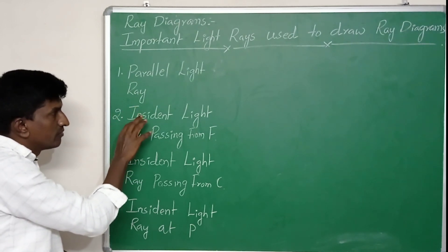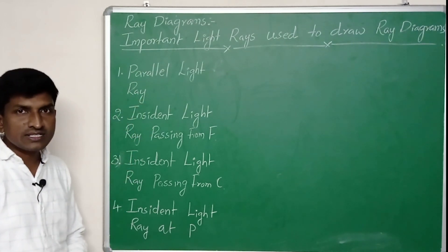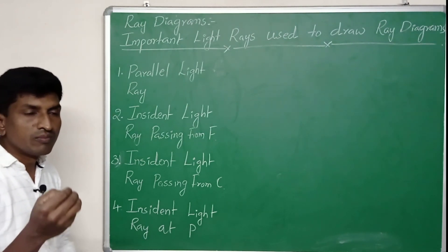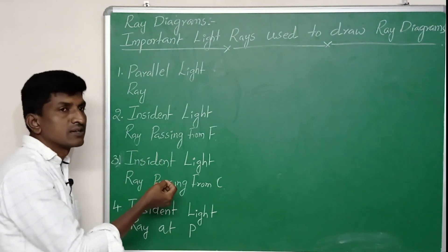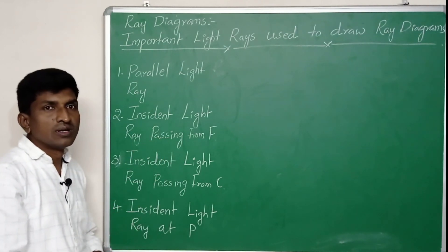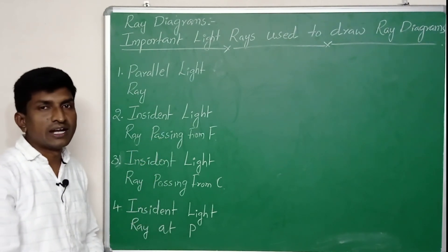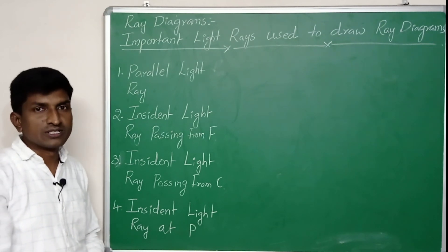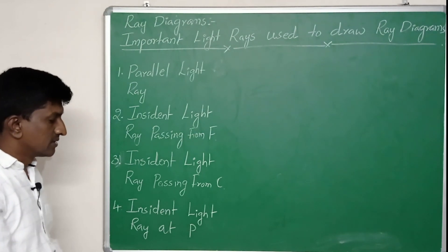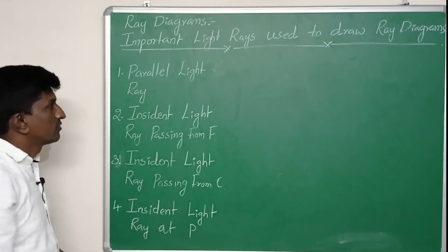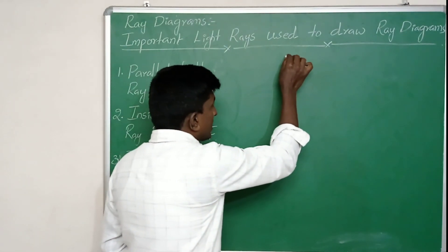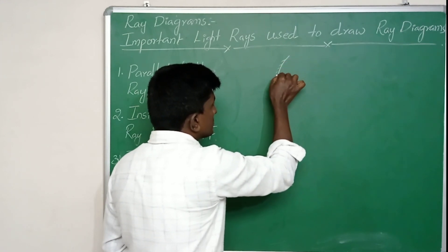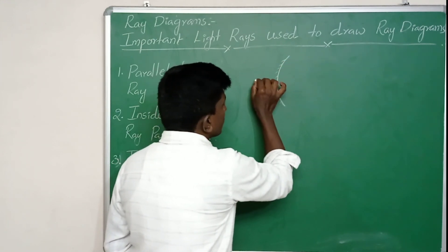Among these four light rays, we mostly use three, and we can use any two of them to draw a ray diagram. Using any two light rays, we can find where the image is formed for a particular object, and determine the size of the image. Let us now discuss each light ray, starting with the concave mirror.